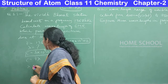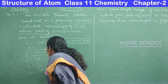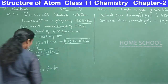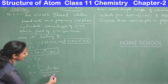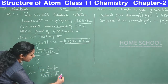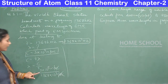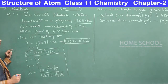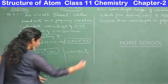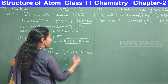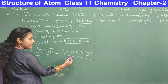Since they ask for λ, rearrange: λ = c/ν. Substituting values: λ = 3×10⁸ m/s ÷ (1368×10³ Hz). The seconds cancel. Calculating 3÷1368 gives approximately 0.00219, so λ = 0.00219×10⁵ meters.